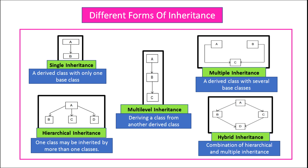In hierarchical inheritance, one class may be inherited by more than one class. That is, you can have more than one child of a single base class. You can see in this example, A is the base class and B, C and D are child classes which are derived from the base class A.